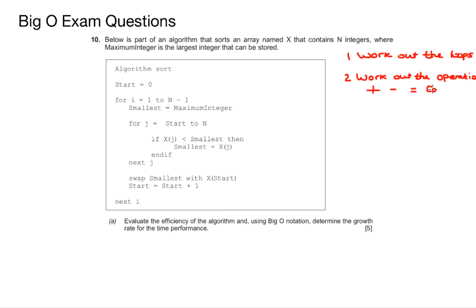Number three, add up the number of operations that we find and then work out from this the Big O Notation when we scale the algorithm up. And don't forget the question asks you to determine the growth rate for time performance, which is all about the efficiency of this algorithm running in real time.